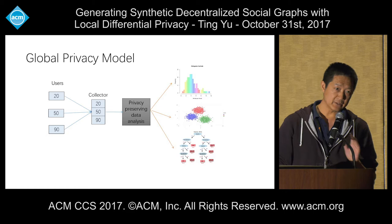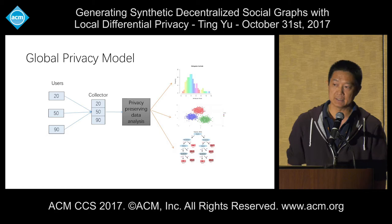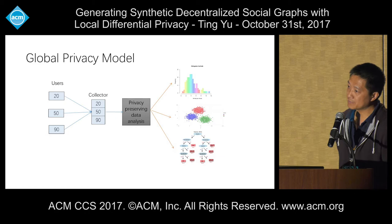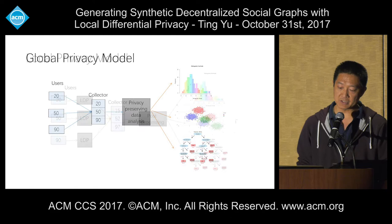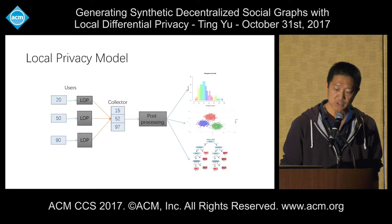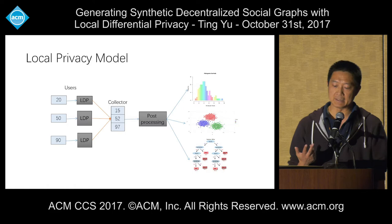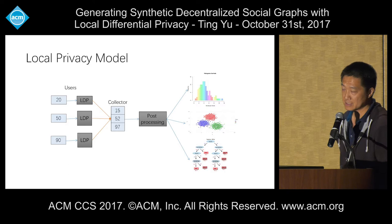Another model is called the local privacy model. In this case, users do not trust any central party to collect their true information. Before they send their information to a data collector, they first apply some privacy techniques so that the data shared with the collector is not the true data. The collector should not be able to infer private information of individuals. But hopefully, by doing some post-processing, we can filter out the noise and still learn some models or statistics about the whole population.